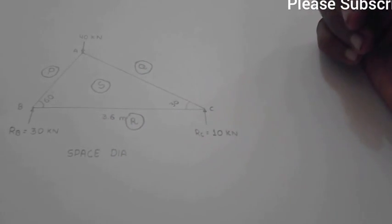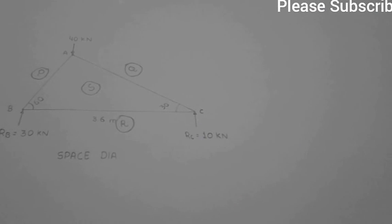To draw the vector diagram, take a suitable scale. I think we should take 1 centimeter equals 5 kilonewtons. You can take any scale, but this is an appropriate scale.